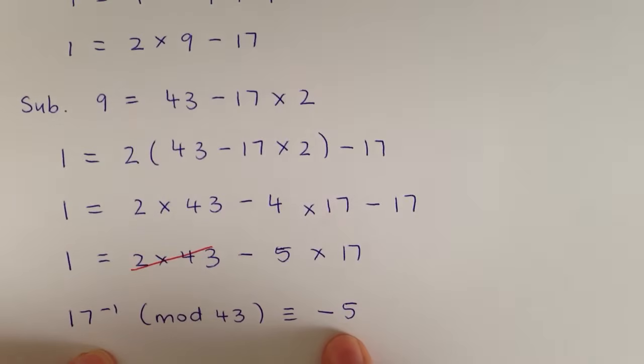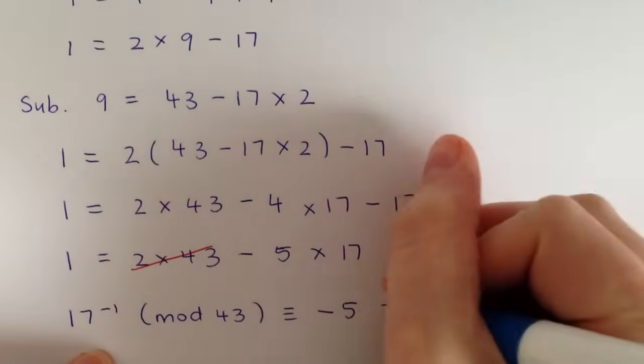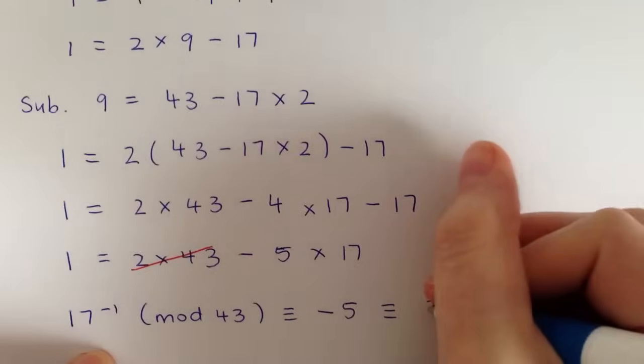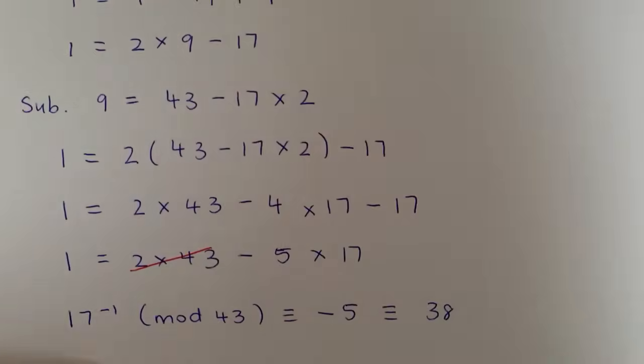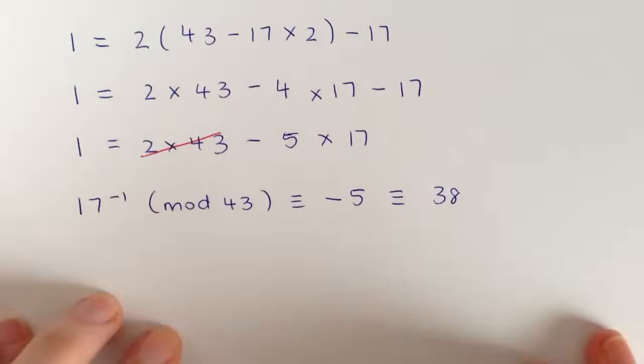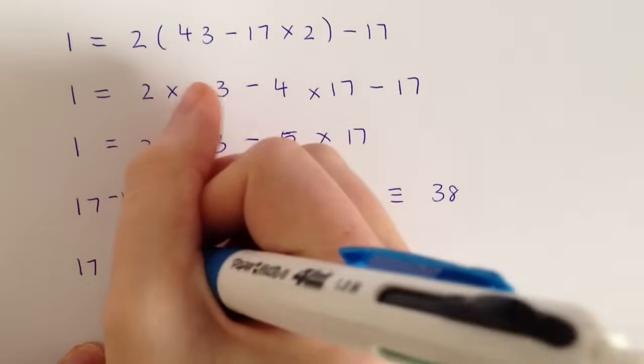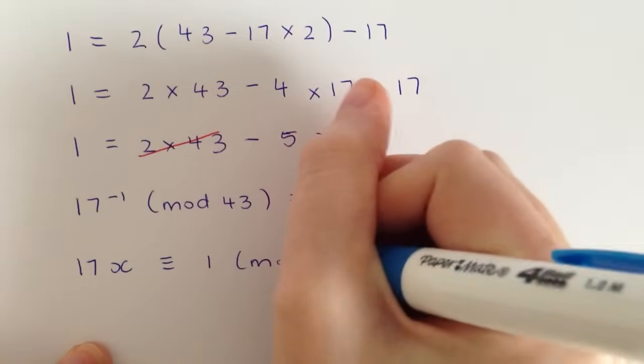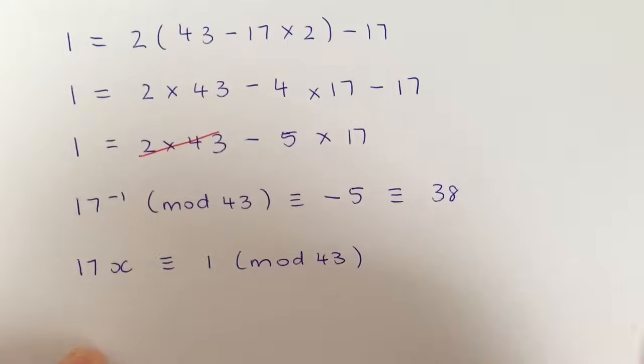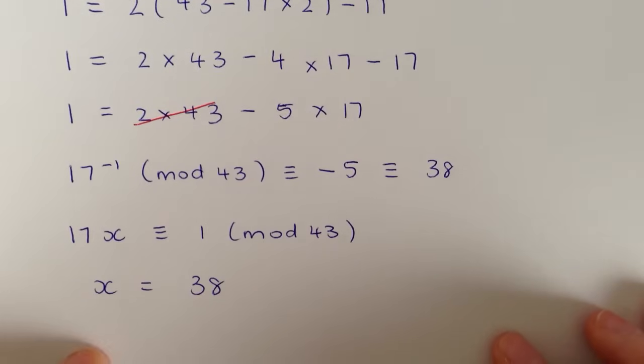We want that between 0 and 42 because it's mod 43. So that is equivalent to 38. So when the original question asked 17x is equivalent to 1, mod 43, then our x equals 38. And that's it. That's how you do it.